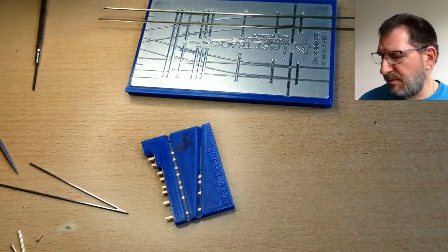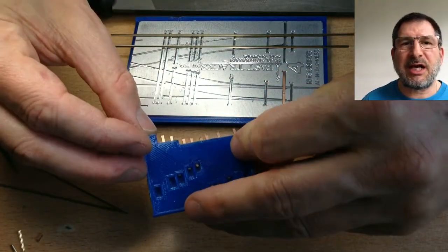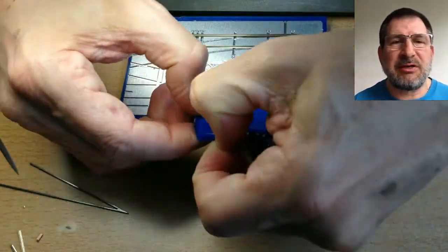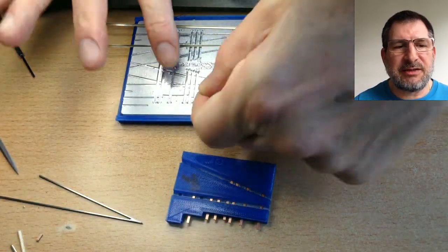Once you have them out, you want to hit them real quick with a little file to make it shiny on the one side before you put them in. It makes it better for the solder joint, so each one comes out, zippity-zip on the file, and then stick them in.